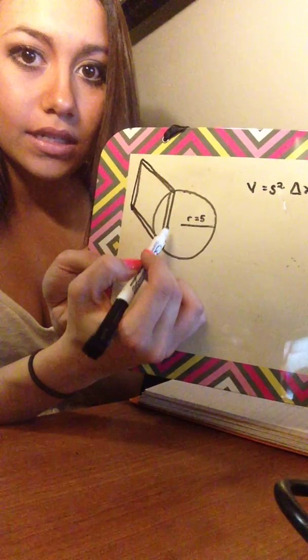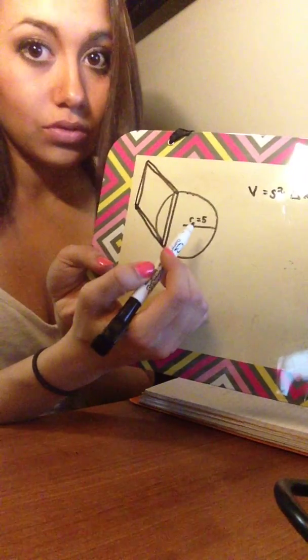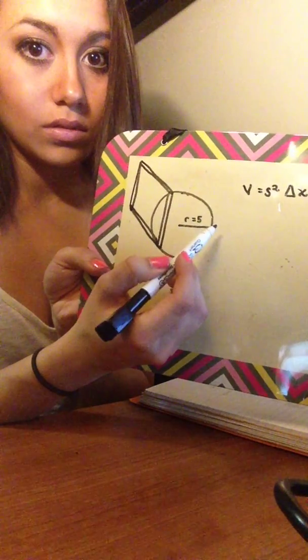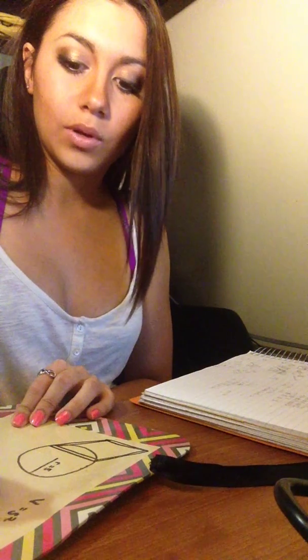We're going to use the positive half. If your side is this entire length, then it's going to be 2 times this arc, so side equals 2 times the square root of 25 minus x squared.